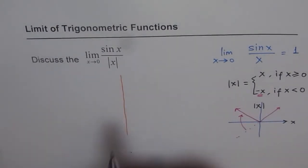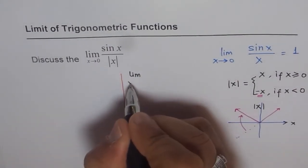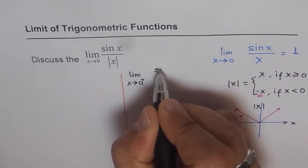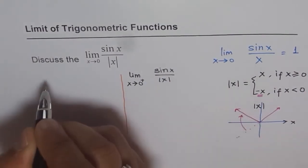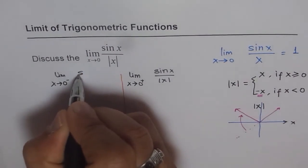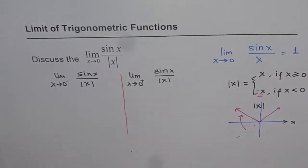So, we can split this problem like this. Limit when x approaches 0 from positive side. Of sin x over absolute x. And limit when x approaches 0 from negative side of sin x over absolute x.